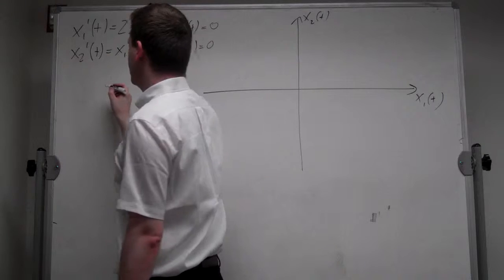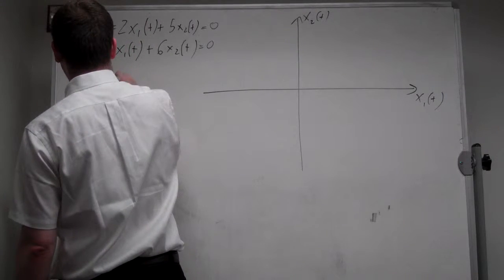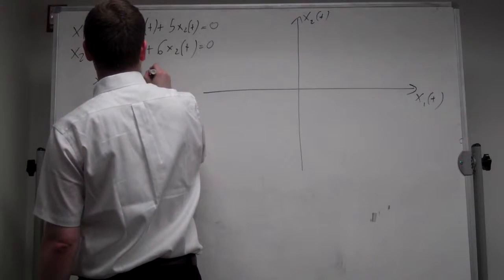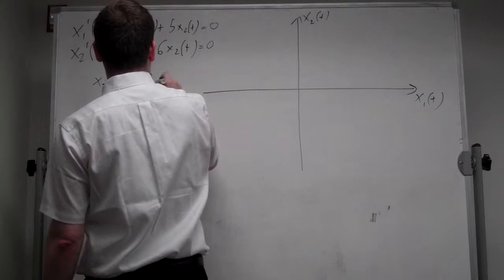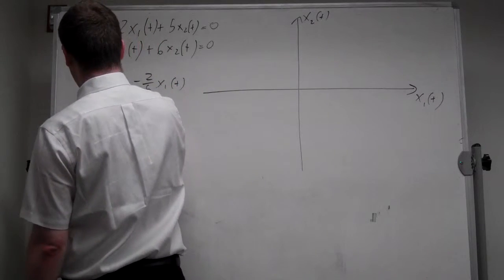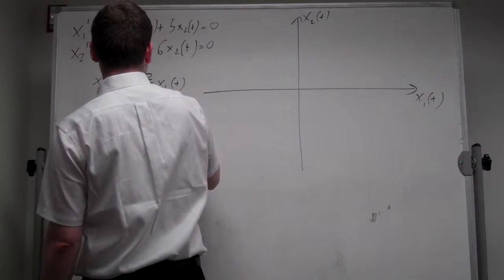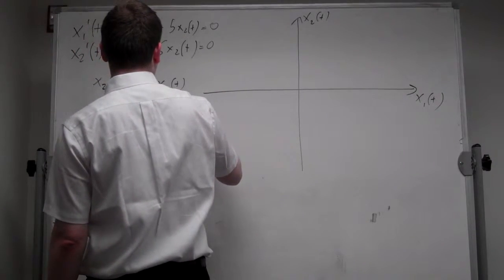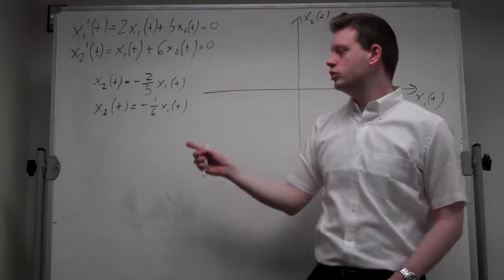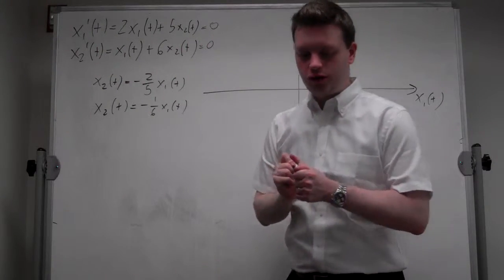From the first equation, we get x2 t is equal to minus 2 over 5 x1 t, and the second one is x2 t is equal to minus 1 over 6 x1 t. Which are our two equations for the lines, so let me draw them.